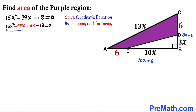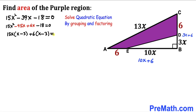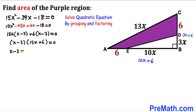Between the first two terms, 15x is in common, and between the last two, 6 is in common. Factoring out 15x gives x minus 3, and factoring out positive 6 also gives x minus 3. So we get (x minus 3)(15x plus 6) equals 0. Separating the two factors: x minus 3 equals 0 and 15x plus 6 equals 0.